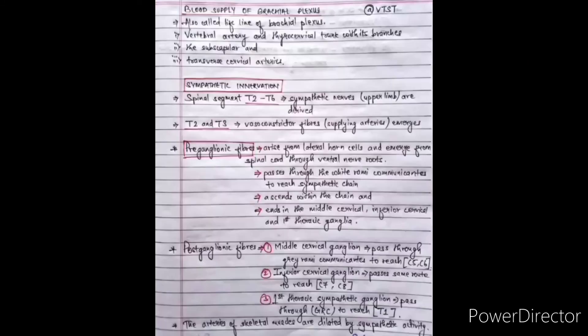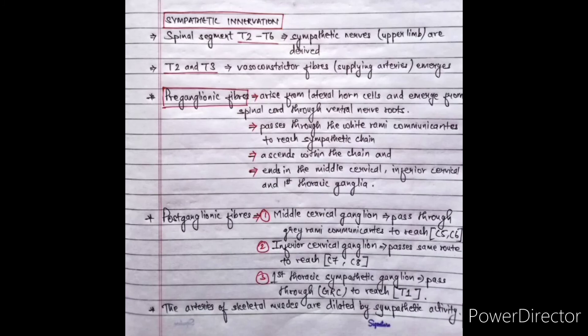The blood supply of the brachial plexus is also called the lifeline of the brachial plexus. We can remember it using the mnemonic 'VT, ST': V for vertebral artery, T for thyrocervical trunk with its branches, S for subscapular artery, and T for transverse cervical artery.